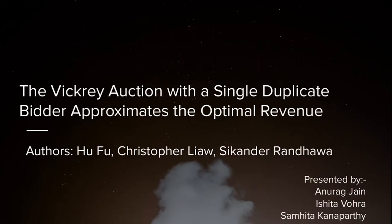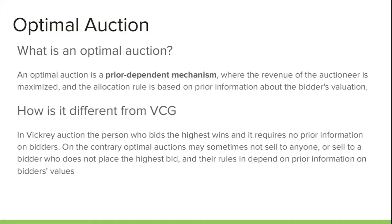Hello, I am Samhita with my teammates Anurath and Ishita, presenting the paper 'The Vickrey Auction with Single Duplicate Bidder Approximates the Optimal Revenue.' Auctions are widely employed at every level of the modern economy, from an individual selling an item on eBay to allocation of coal blocks. The purpose of an auction is to generate more money for the seller. A lot of work in mechanism design has been done to achieve optimal revenue. Revenue-optimal auctions are prior-dependent mechanisms where the auctioneer's revenue is maximized with the allocation rule based on the prior distributions of the bidders.